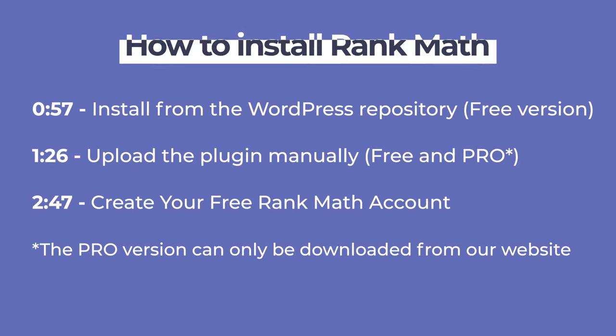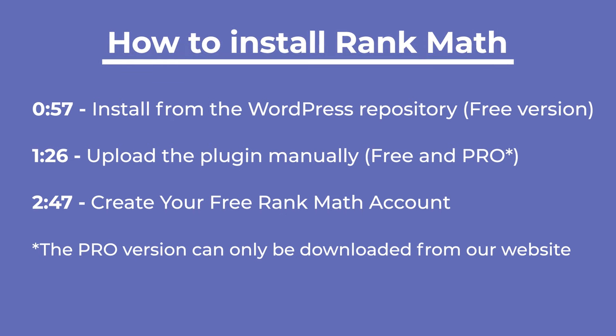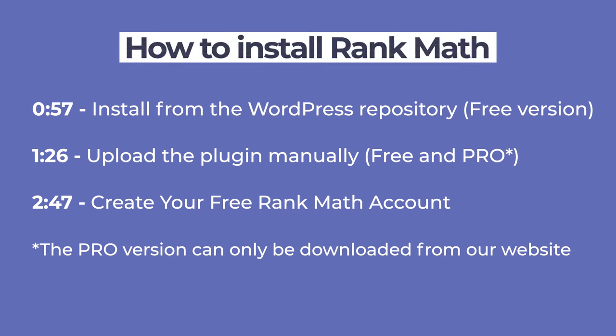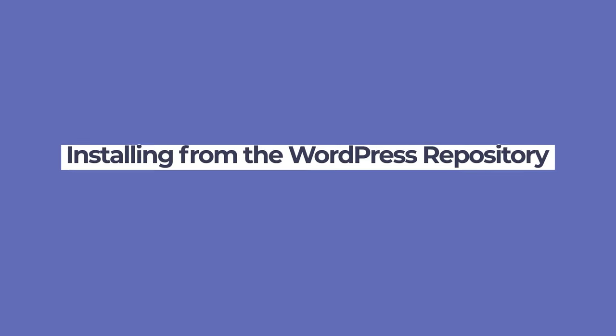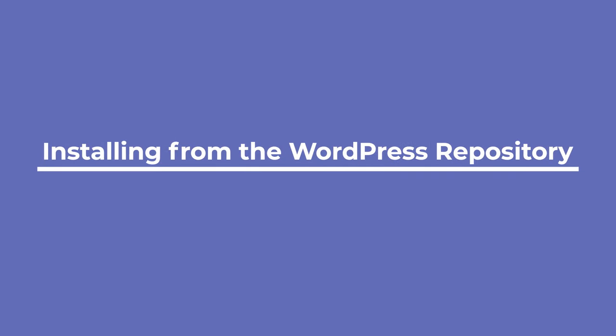Now let's install Rank Math on your website. The plugin's free version can be installed through two methods: from the WordPress repository or uploading it manually. However, the pro version can only be downloaded from our website and uploaded manually. To install Rank Math through the WordPress repository, from within your website, access the plugins section of the WordPress panel.